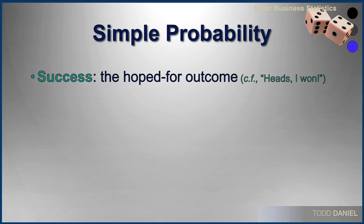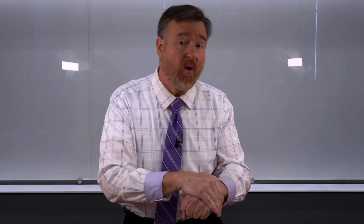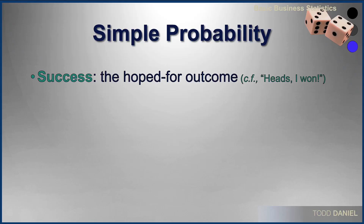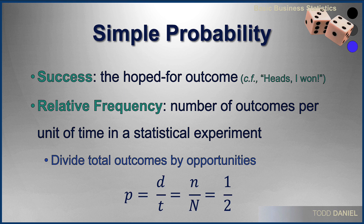Success is the hoped-for outcome. If you called heads and it is in fact heads, you win — you don't have to pay for dinner. That's the one we would use as our reference point when figuring out probability. Relative frequency is the number of outcomes per unit of time in a statistical experiment. You would divide the total number of outcomes by opportunities, which we could describe as p equals d over t — desired number of outcomes or successes out of total outcomes. You will also see it as lowercase n over uppercase N, or placed into actual numbers such as 1 over 2.